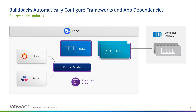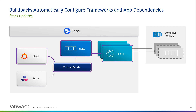KPACK and Tanzu Build Service will continually monitor all of these source locations for updates. With updates to the stack, whether from an OS-level security patch or a new custom golden image being made available, KPACK and Tanzu Build Service will automatically create new, secured, fully patched container images and put them into your container registry to be picked up and deployed by your continuous delivery pipelines.